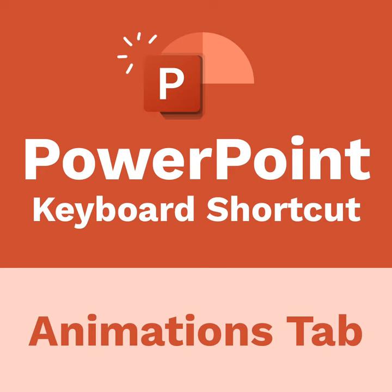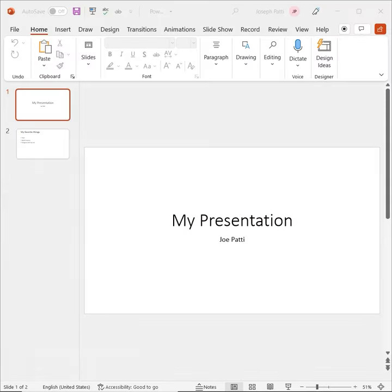Hi, this is Joe Patti with LearnIt, and today we're going to go over how we can get to the Animations tab by using the keyboard shortcut. Now, the keyboard shortcut for the Animations tab is going to be the Alt key plus A, A for Animations.